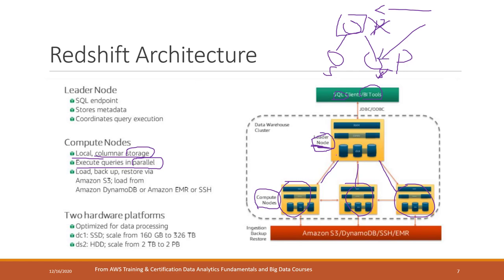However, in Redshift, all the compute nodes run the queries in parallel. They each run part of the job and return their results together to the leader node, and the leader node returns the final accurate result to the client.